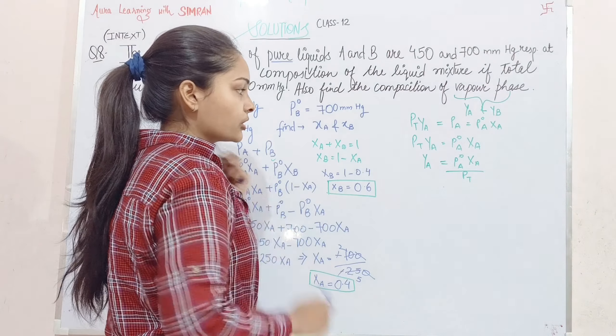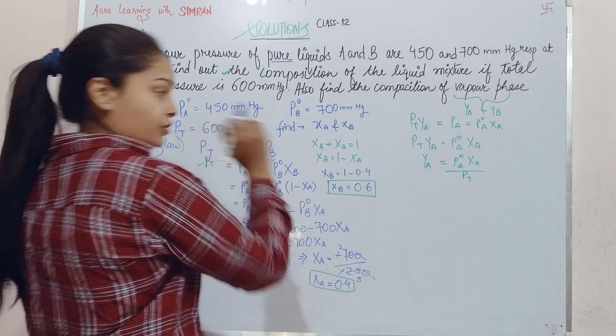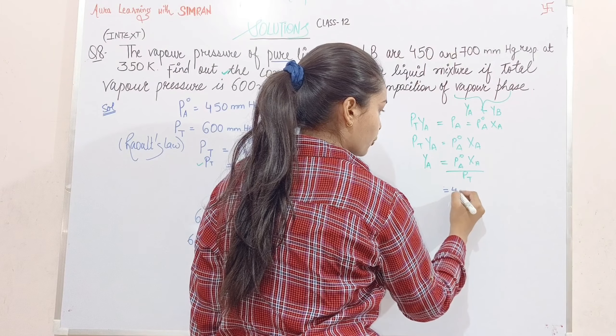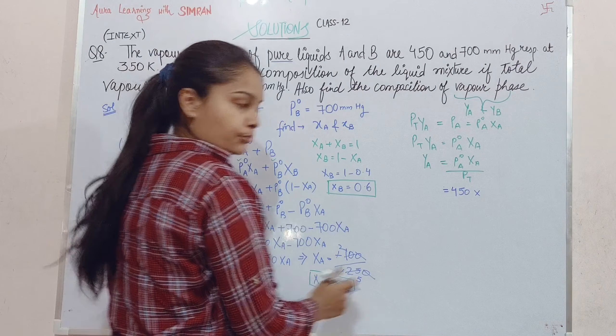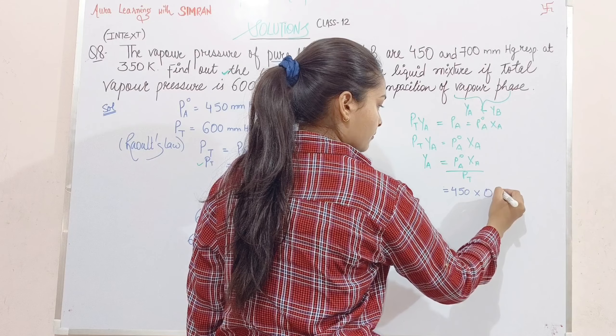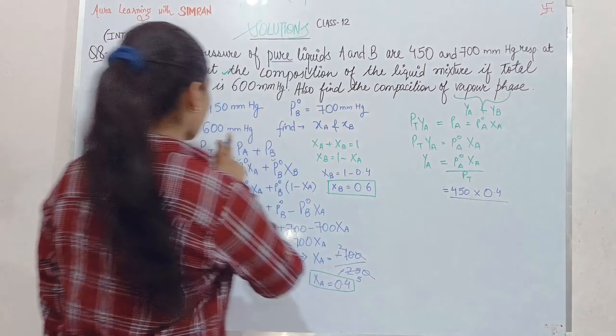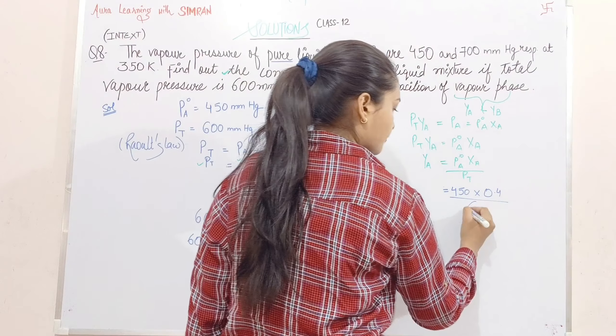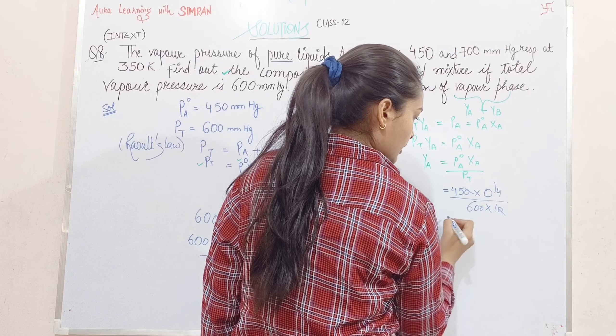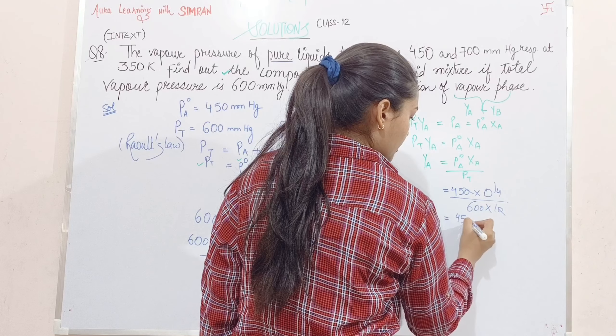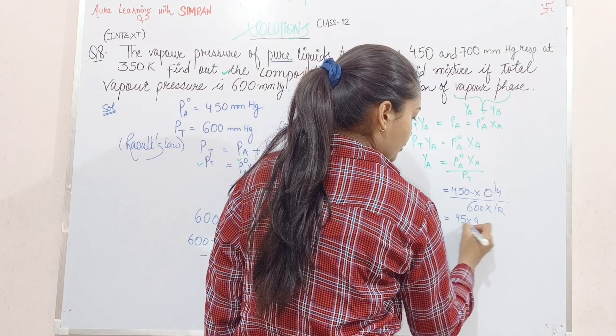yA equals P°A·χA upon Pt. P°A is 450, χA is 0.4, Pt is 600. Canceling zeros: 45 times 4 divided by 6. yA equals 0.3.